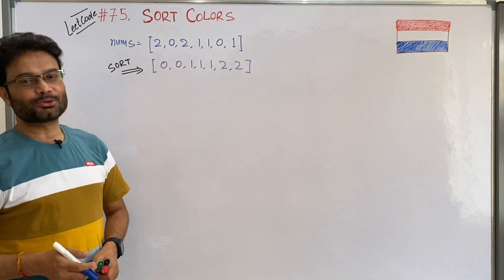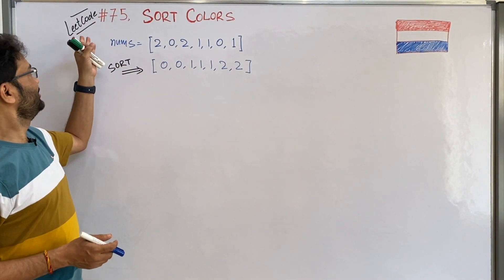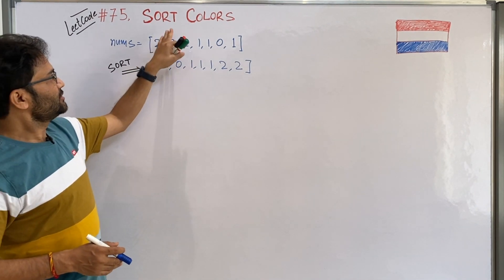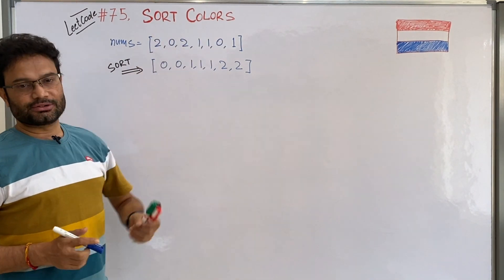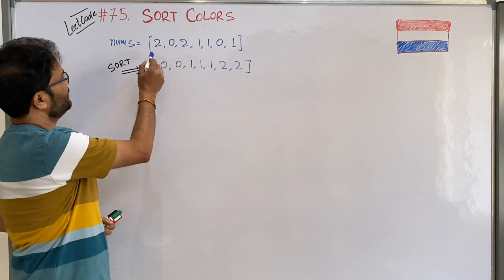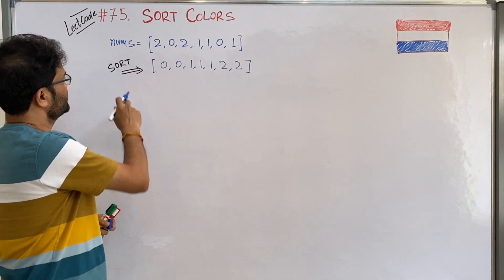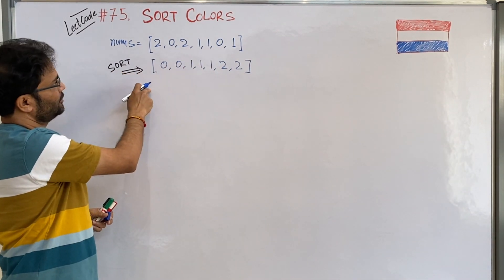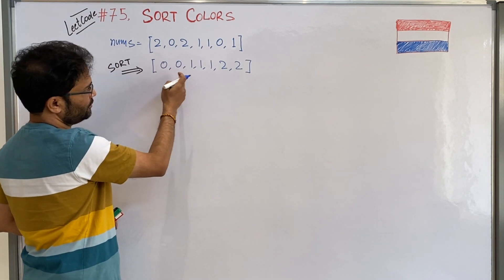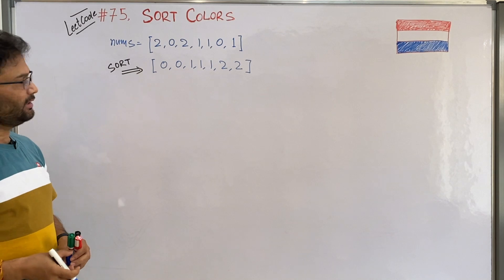In this video we are going to solve another problem from LeetCode 75 index: the Sort Colors problem. You have been given one array and you have to just sort it. If you see, I sorted it: first the 0, then 1, then the 2, and the solution is okay.